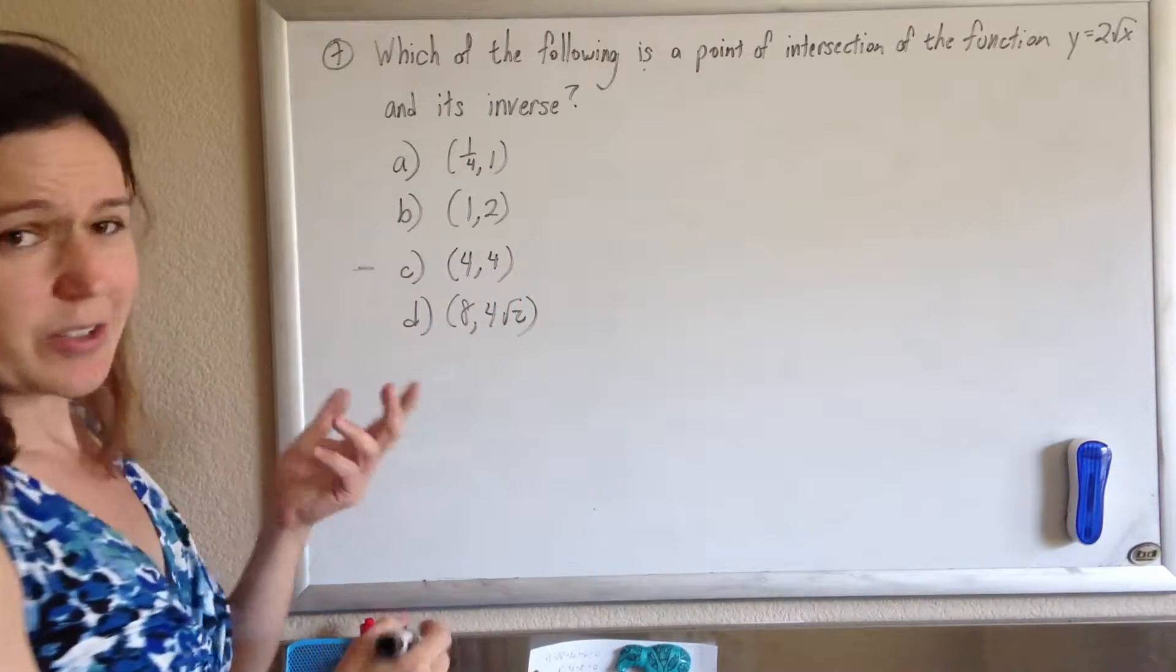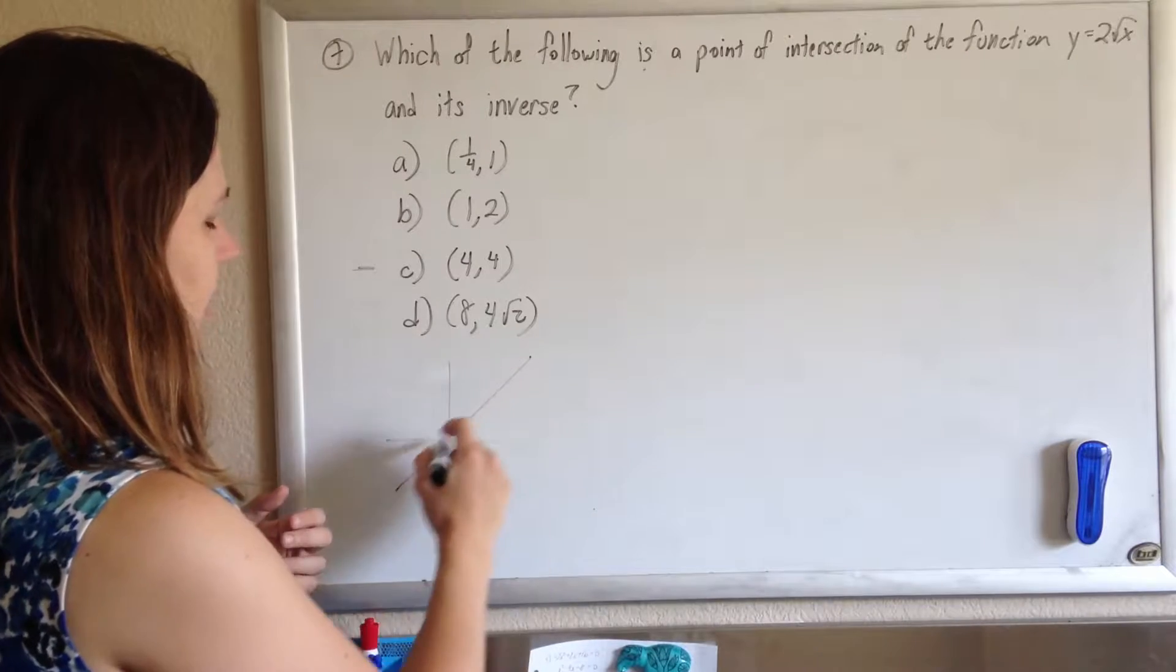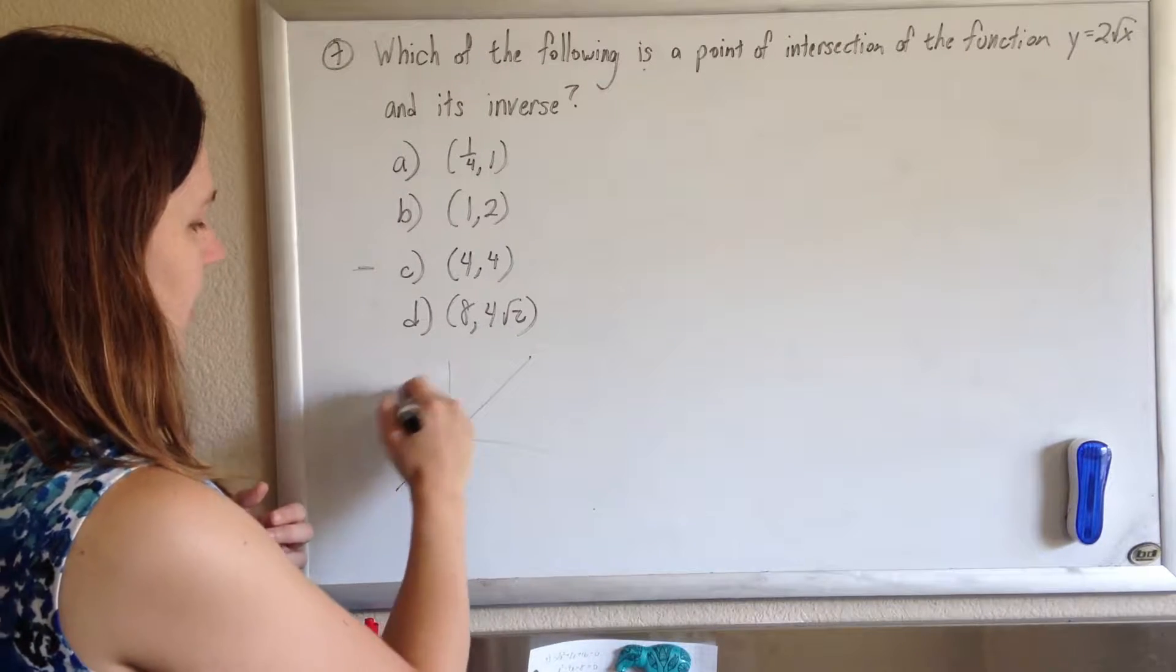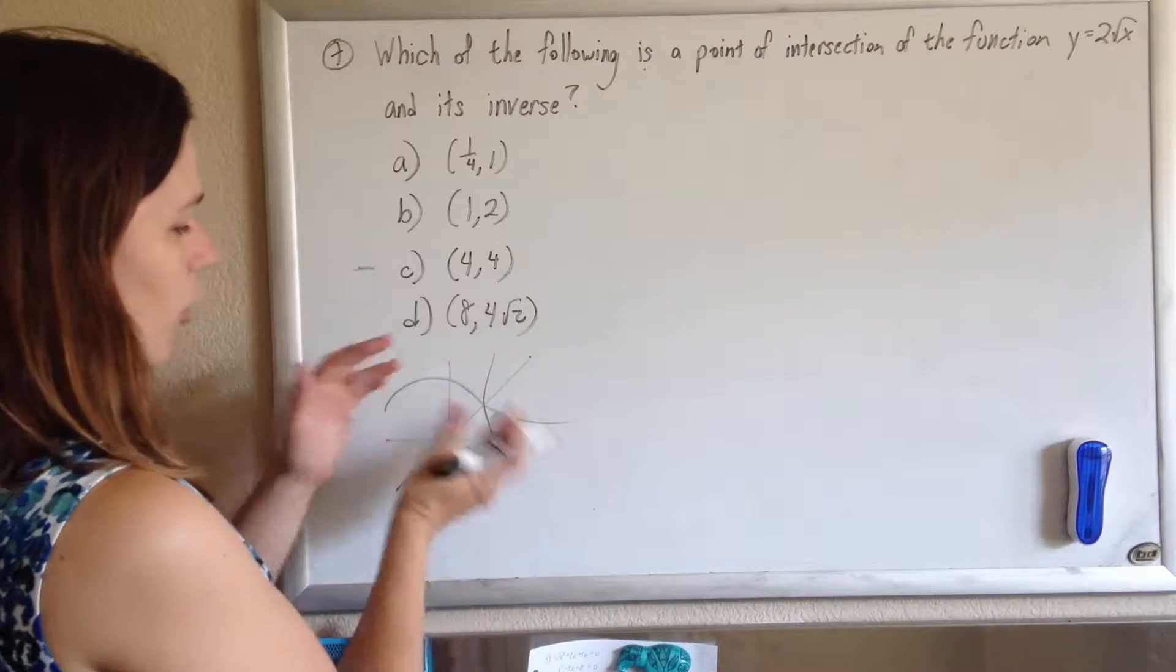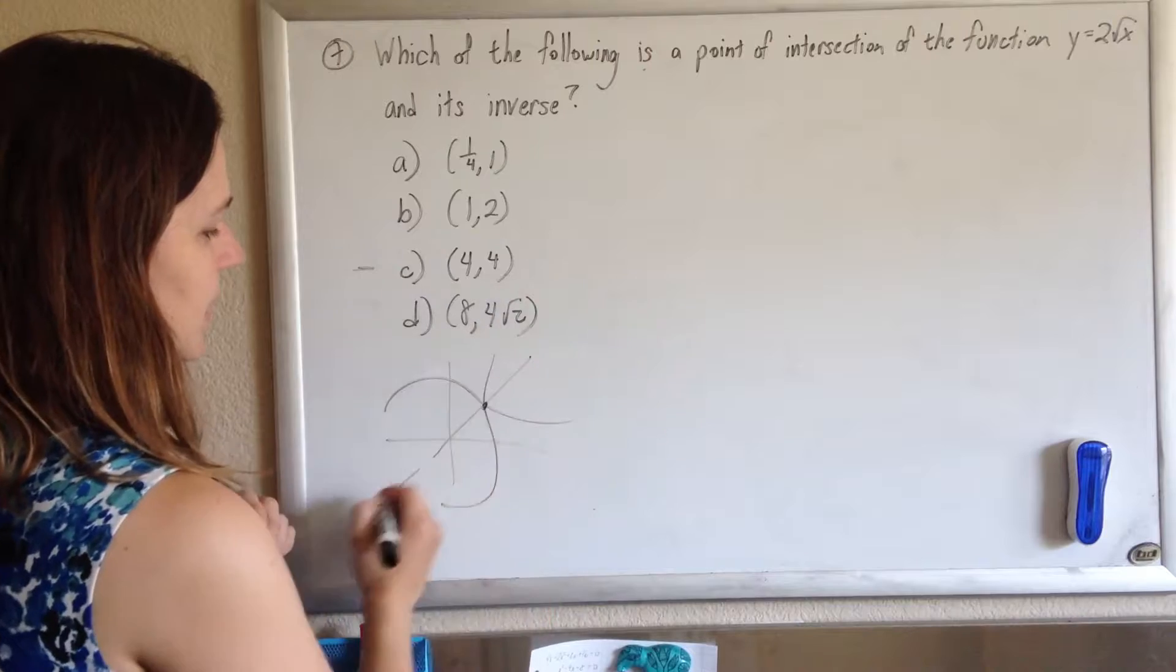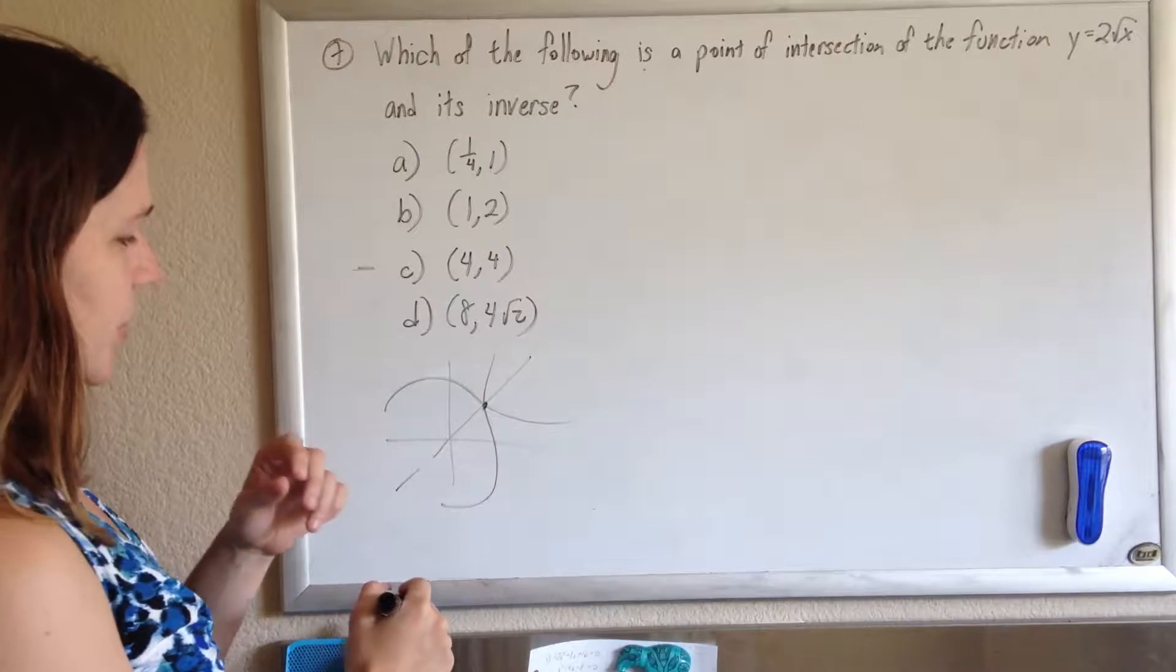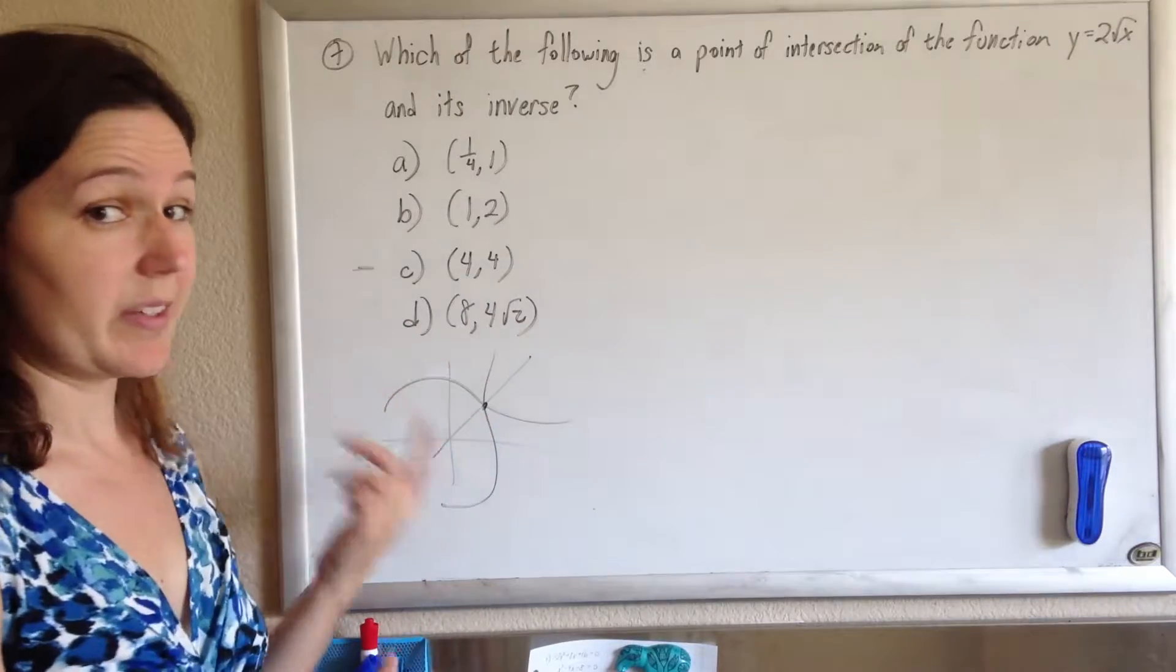So, we're thinking our answer is going to be c. And you can also tell that a function and its inverse will be nice and symmetric over the line y equals x. So, the only place that they can meet is on that line y equals x. So, the x and the y value should be the same.